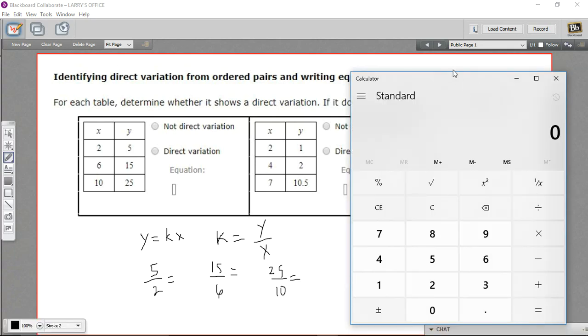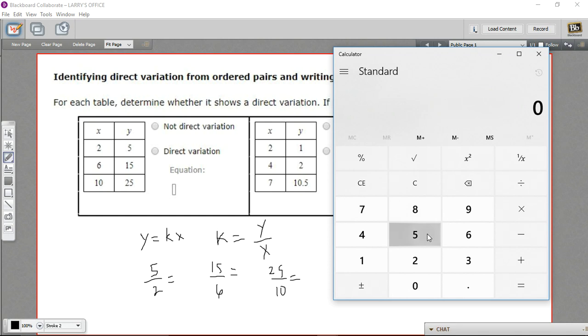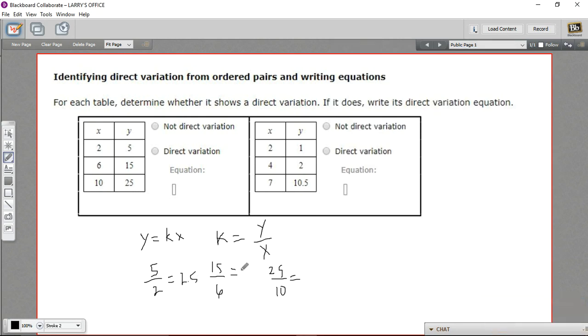First, we have 5 halves. 5 divided by 2 is 2.5. Let's try 15 over 6. 15 divided by 6, that's also 2.5. And let's try 25 divided by 10, also 2.5. So all of these equal 2.5. This means this is showing direct variation.